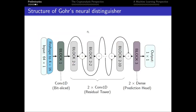This is the structure of Gohr's neural distinguisher. The input is a pair of ciphertexts encoded in binary. It passes through multiple convolutional blocks before moving on to the prediction head, eventually outputting a single value between 0 and 1. This score is what the neural distinguisher gives the ciphertext pair. If the score is greater than or equal to 0.5, it is considered real — coming from the fixed input difference — otherwise it is considered random.